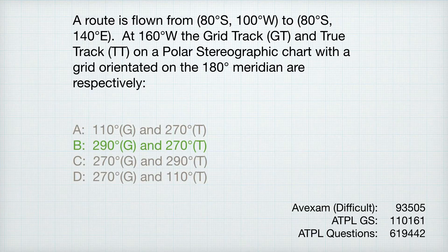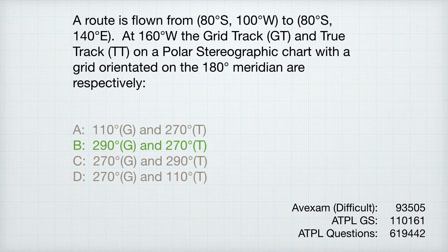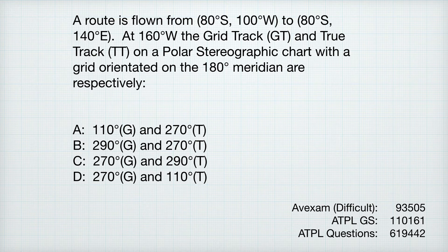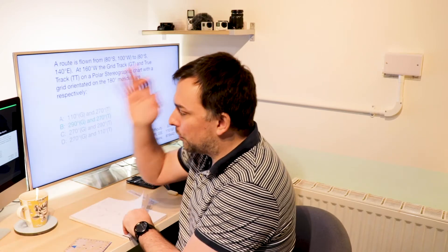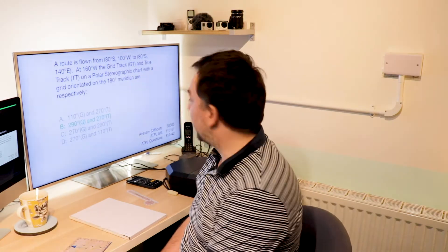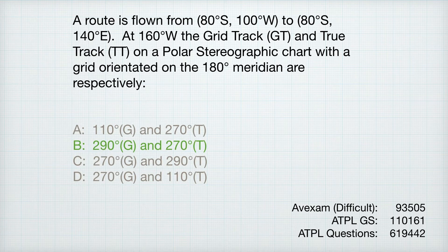That confirms option B: 290 grid, 270 true. Where you could get tripped up — looking at what the potential options are, B and C are swapped answers, so it'd be really easy to mix up grid and true. When you're in a rush in an exam, you could quite easily make that mistake. Basically, do it right and you'll be fine. On AVEXAM it's 93505, on ATPL-GS that one is 110161, and on ATPL Questions, 619442. It's probably on Bristol too — if it is, leave a comment below.